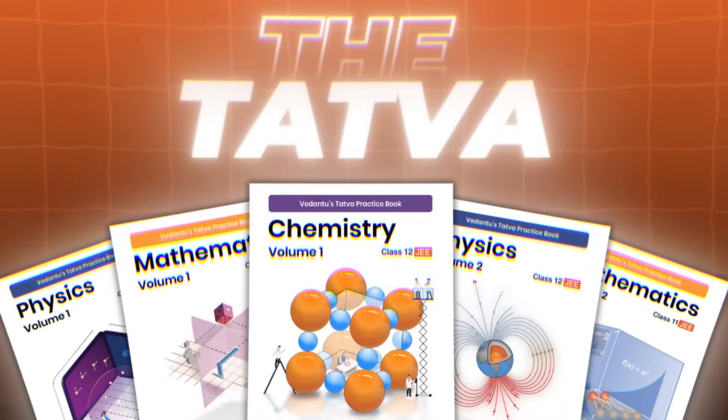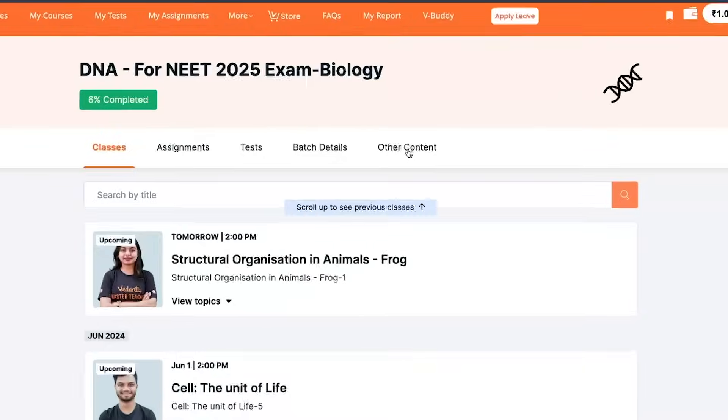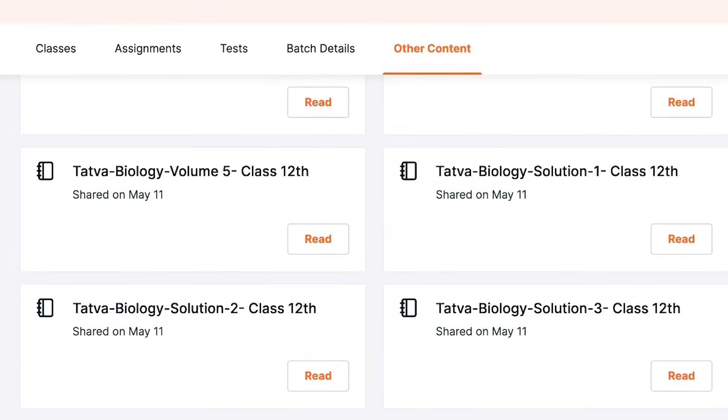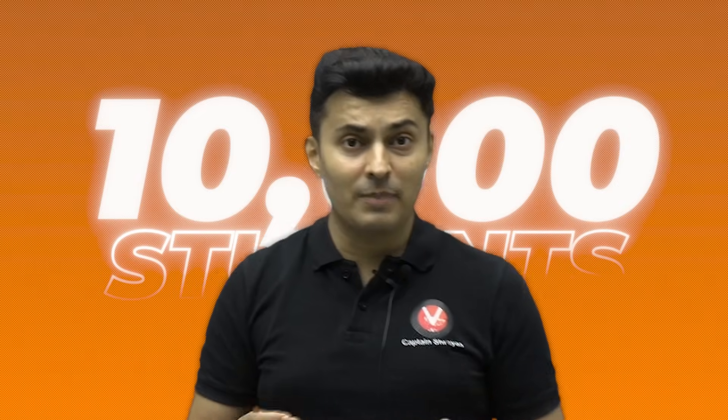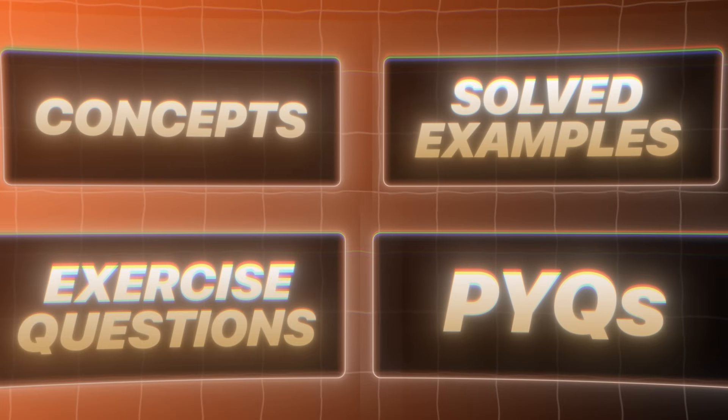So, we have launched the Tattwa. The ultimate study material for IIT-JEE or NEET. Over the past few years, 10,000 plus students have spent 4000 rupees or more to buy these books. But with V-Prime, you get it all for free. Concepts, solved examples, PYQs, questions for you to practice, along with their solutions. Everything for free. Just with V-Prime.